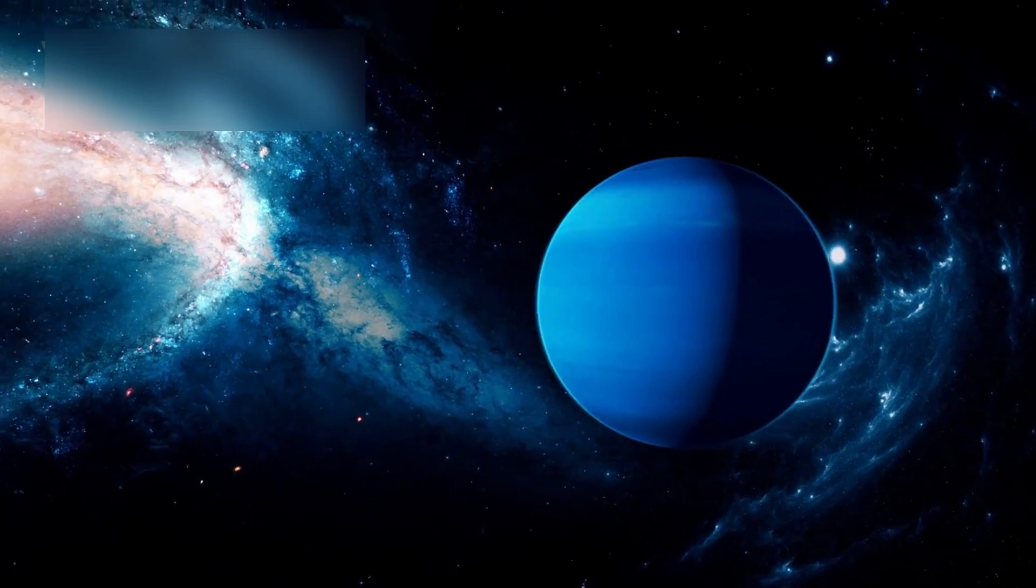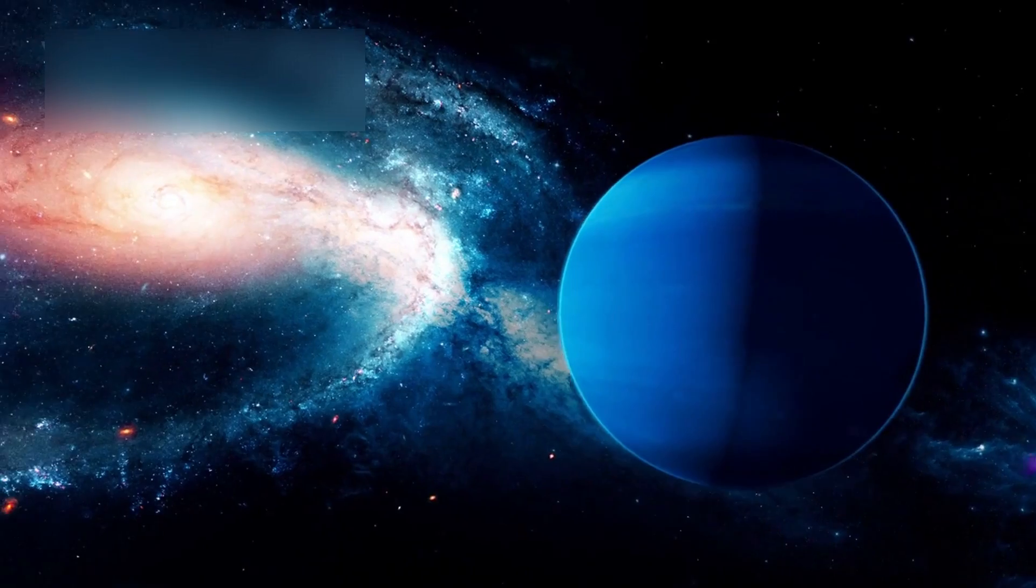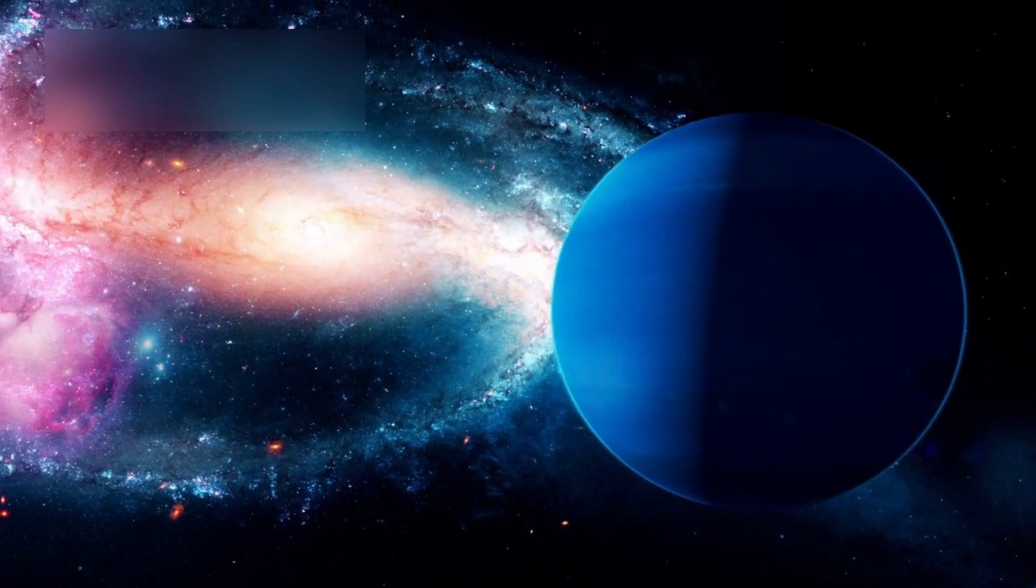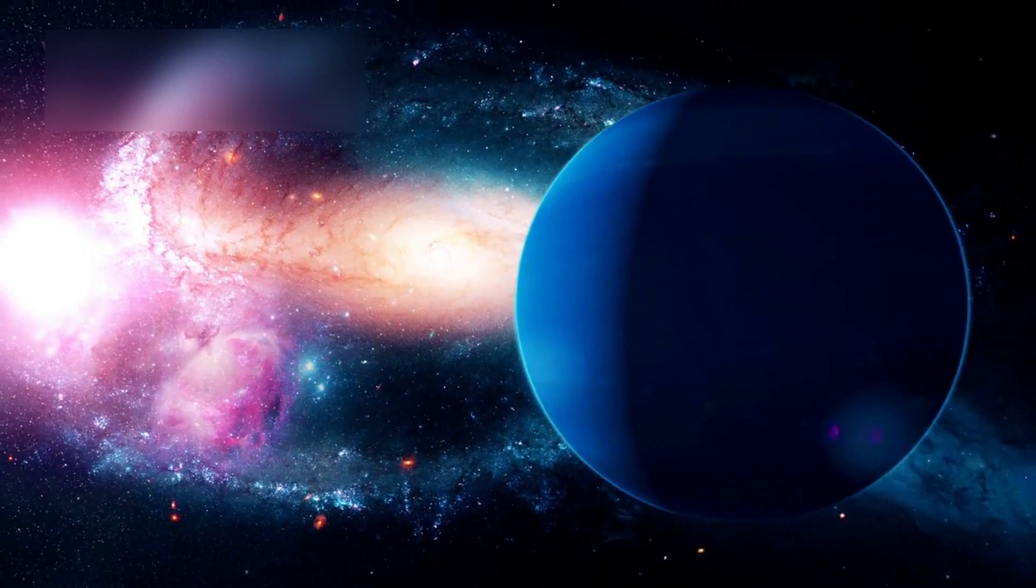Neptune, far from being just another giant, may be the Rosetta Stone that helps us interpret the vast population of Neptune-like worlds orbiting alien suns.